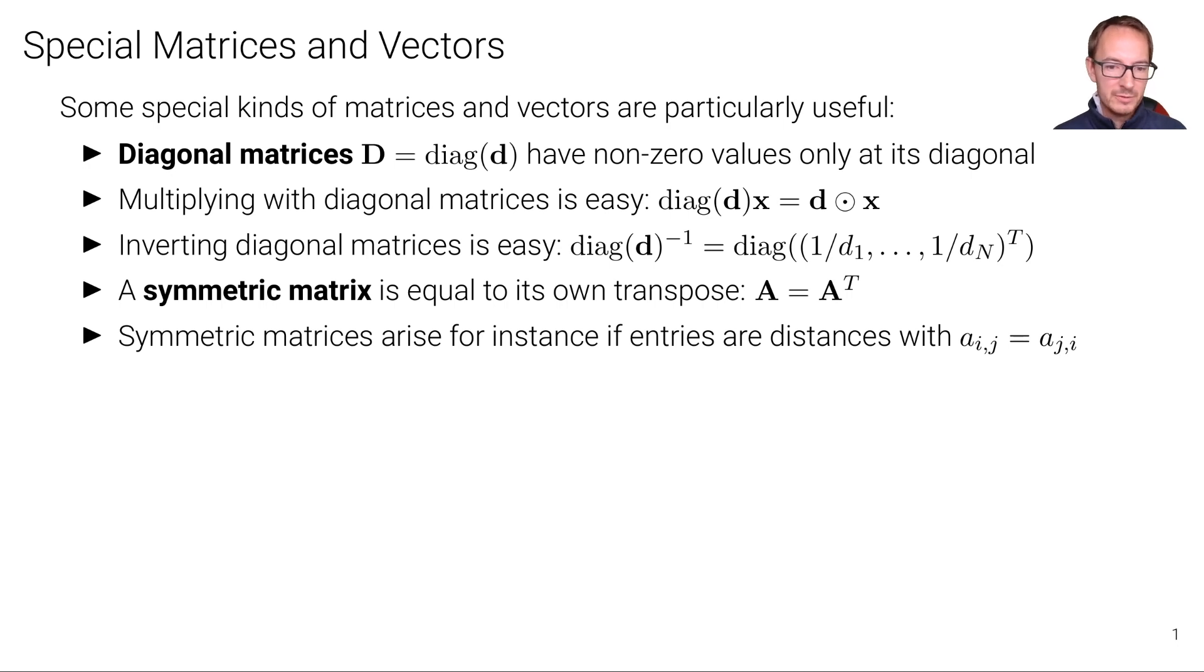Symmetric matrices arise, for instance, if entries are distances. We've seen distances before, measuring distances between, let's say, cities. If we have five cities, we can represent this as a five by five matrix, where each element is the distance between two cities.